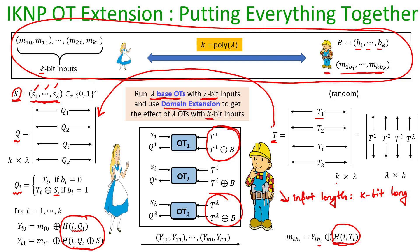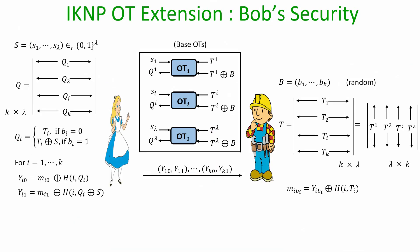In practice, K is significantly large compared to lambda. K could be order of millions or billions and lambda could be of order say 2048 and so on. So by running only a small number of OTs and doing the public key operations which are involved in only those lambda number of OT instances, we are actually getting the effect of million number of OT instances without running so many public key operations. So now let us quickly analyze the security of this entire OT extension protocol whether Bob's security is maintained or not, Alice's security is maintained or not.